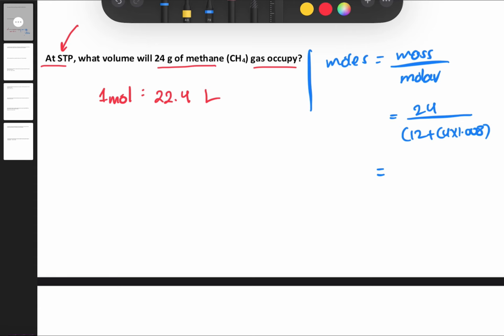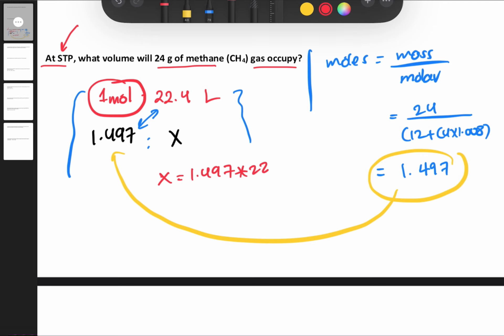The moles equal 1.497. Now we use the STP relationship. We put 1.497 here and X for the unknown volume. The numbers in front of each other multiply, then divide by the other one. So X equals 1.497 times 22.4, which equals 33.53 liters of this gas.